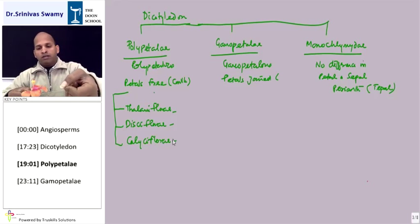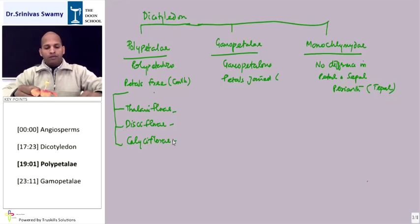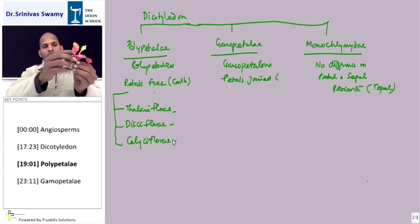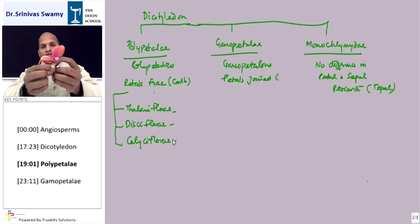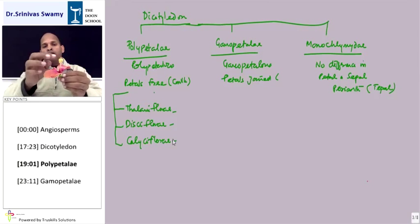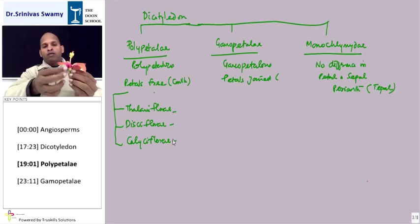If I take out the petals, if you look at this - this is calyx, the green part, or sepal. This is corolla or petal. Then you have got the style, stigma, and ovary at the base. Ovary you can spot it out - ovary is present at the base.